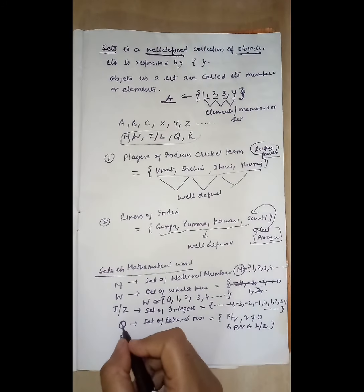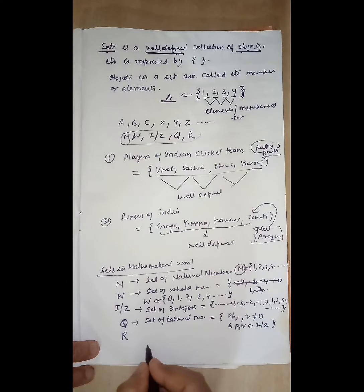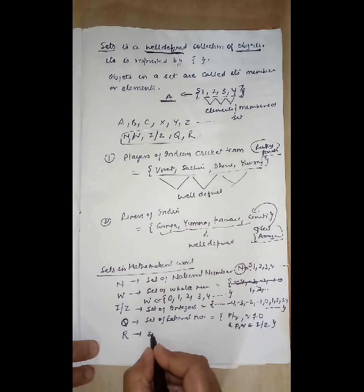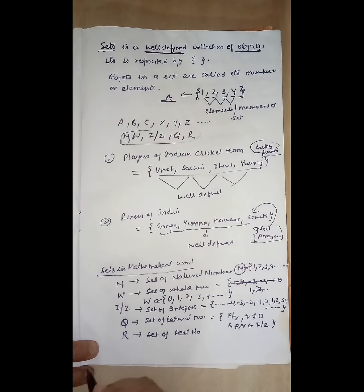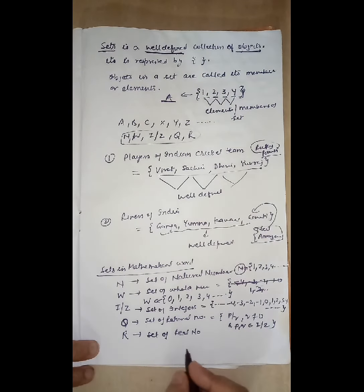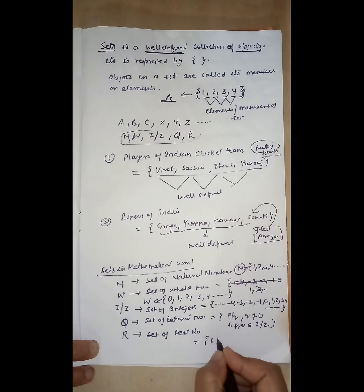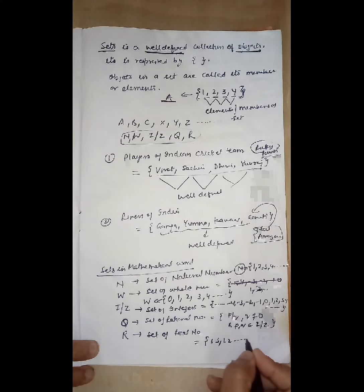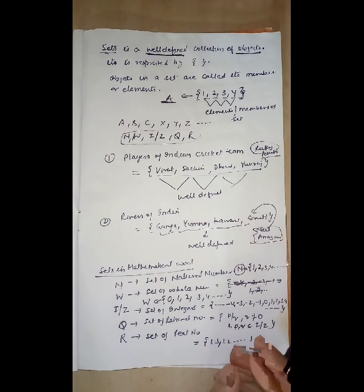R represents the set of real numbers. Real numbers are anything that can be represented on a number line — any number such as 1.2, 1.3, and so on. Any number of this kind is known as a real number.